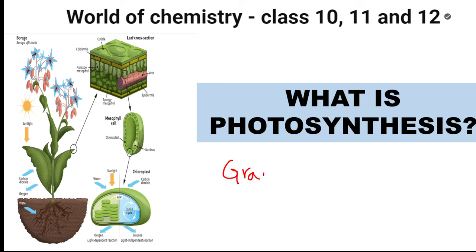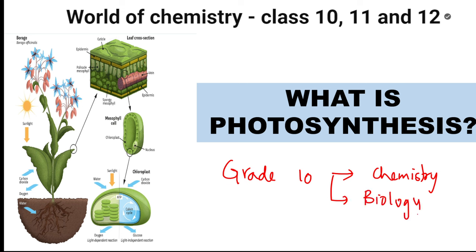In Grade 10, we have already started and we have done one chemistry chapter. The first unit chemistry is done and I've already sent the notes in the Telegram also. Now, we have started with the biology chapter — that's nothing but your life processes. In life processes, I have already done one video where I've explained what is meant by nutrition and types of nutrition also. Now, in this particular video, I'm going to explain what is meant by photosynthesis.